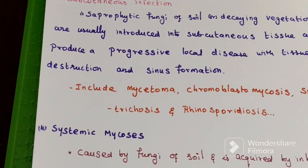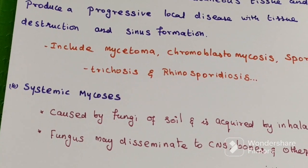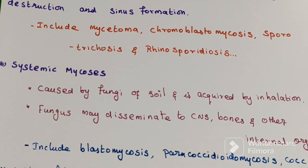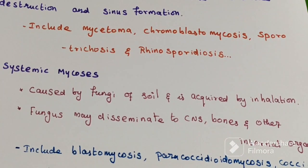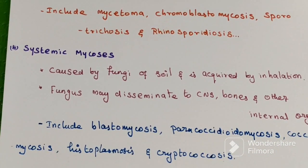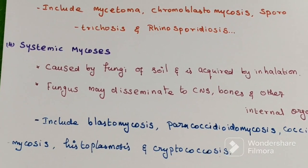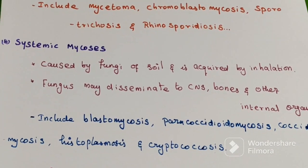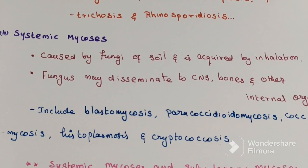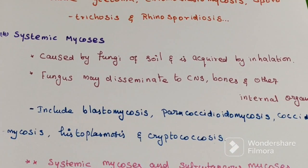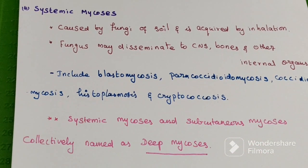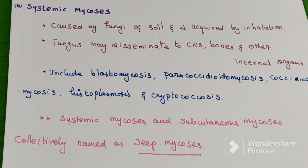The last one is systemic mycosis. These are fungal infections that spread throughout the body — the complete system, including the central nervous system, respiratory system, and organ levels. Formation of nodules in the brain is caused by Cryptococcus neoformans. Lungs are affected by aspergillosis through respiratory infection. Histoplasmosis affects all tissues of the body, especially the skin. Systemic mycosis and subcutaneous mycosis collectively are called deep mycosis.